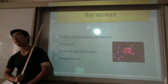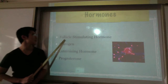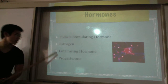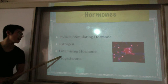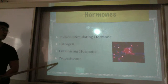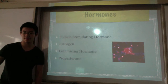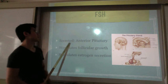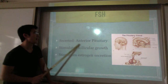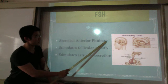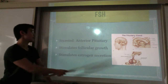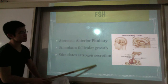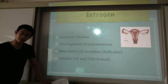So as mentioned above, we're going to be focusing more on the hormones. The first one is FSH, follicle-stimulating hormone. The second one is estrogen. The third one is luteinizing hormone, also known as LH. And the fourth one is progesterone. FSH is secreted by the anterior pituitary gland. It stimulates follicular growth and also stimulates estrogen secretion.